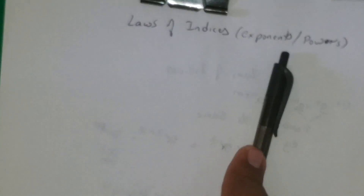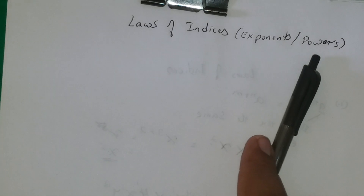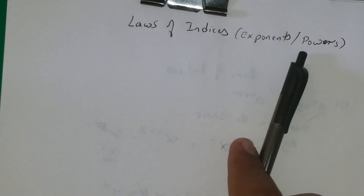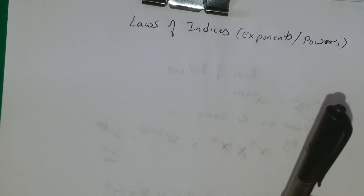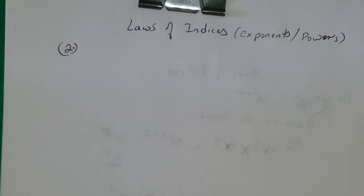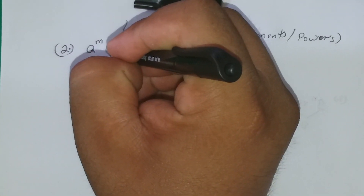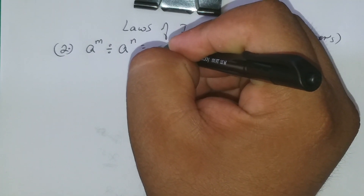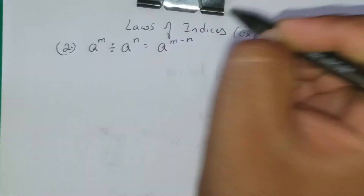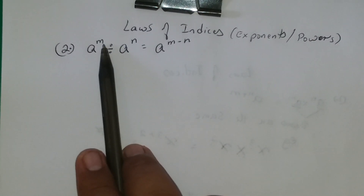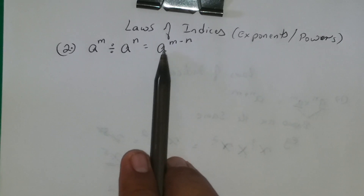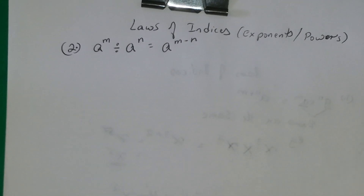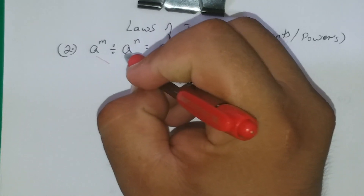Hello everyone. We want to continue with laws of indices, exponents, or powers. We have already covered the first law. Now we want to take a look at the second law: a to the m divided by a to the n equals a to the m minus n.